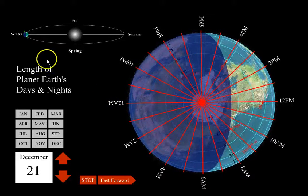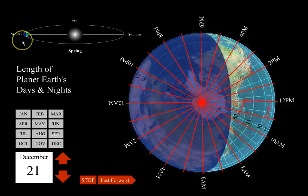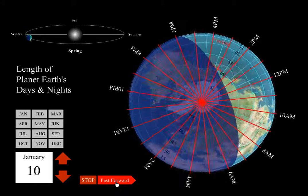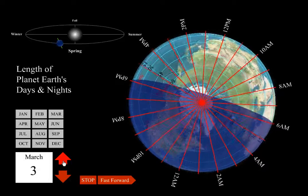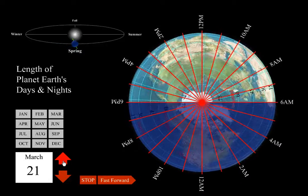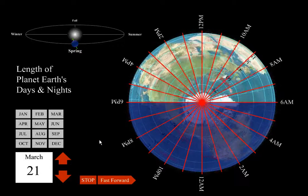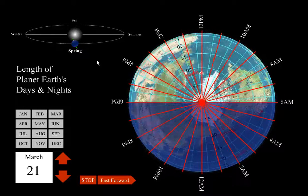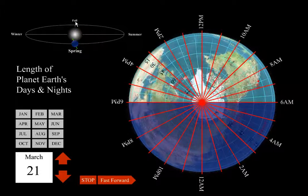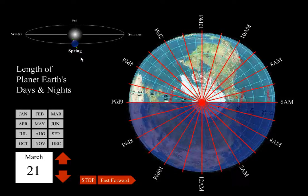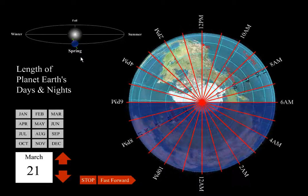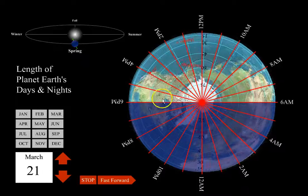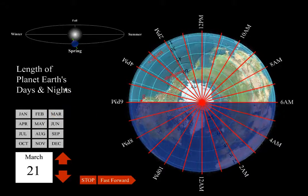Now let's move to the spring equinox. Pay attention to the earth over here as well as our overhead view. We'll step through to the spring equinox. We can see we're on the opposite side of the earth's orbit, and this should look very familiar because the spring equinox and the fall equinox are symmetrical. Neither hemisphere is tilted towards the sun nor away, so there is no sunlight advantage for either hemisphere. Our black and white cookie is 50-50 again — daylight and darkness.